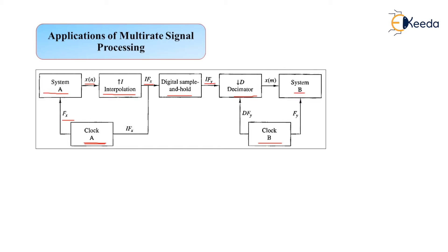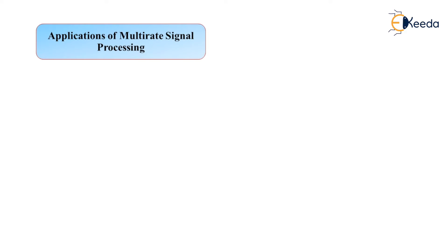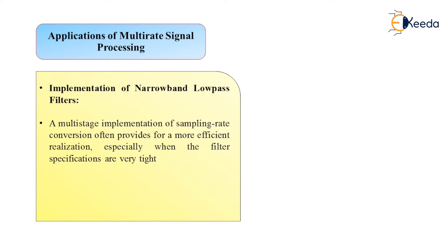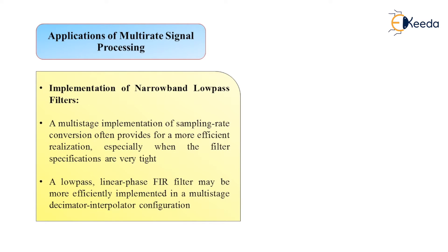The next application is the implementation of narrow-band low-pass filters. Multi-stage implementation of sampling rate conversion often provides a more efficient realization, especially when the filter specifications are very tight. A low-pass linear-phase FIR filter may be more efficiently implemented in a multi-stage decimator-interpolator configuration.